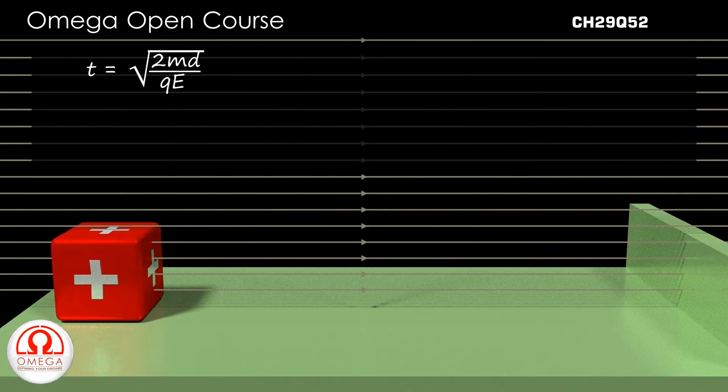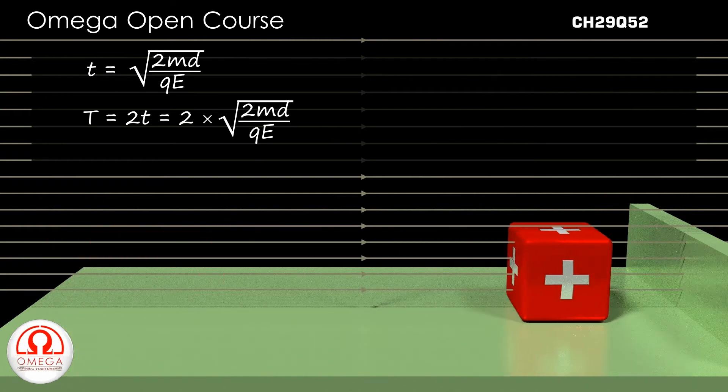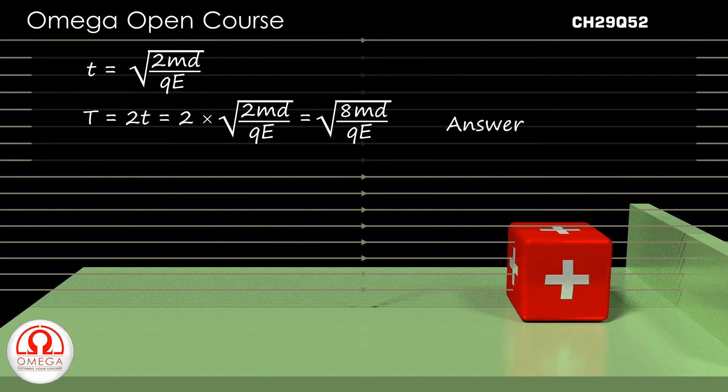The block will take the same time to travel from the wall to the initial position. Thus, the time period of the motion is 2t or 2 into root under 2md by QE, or root under 8md by QE. This is our answer.